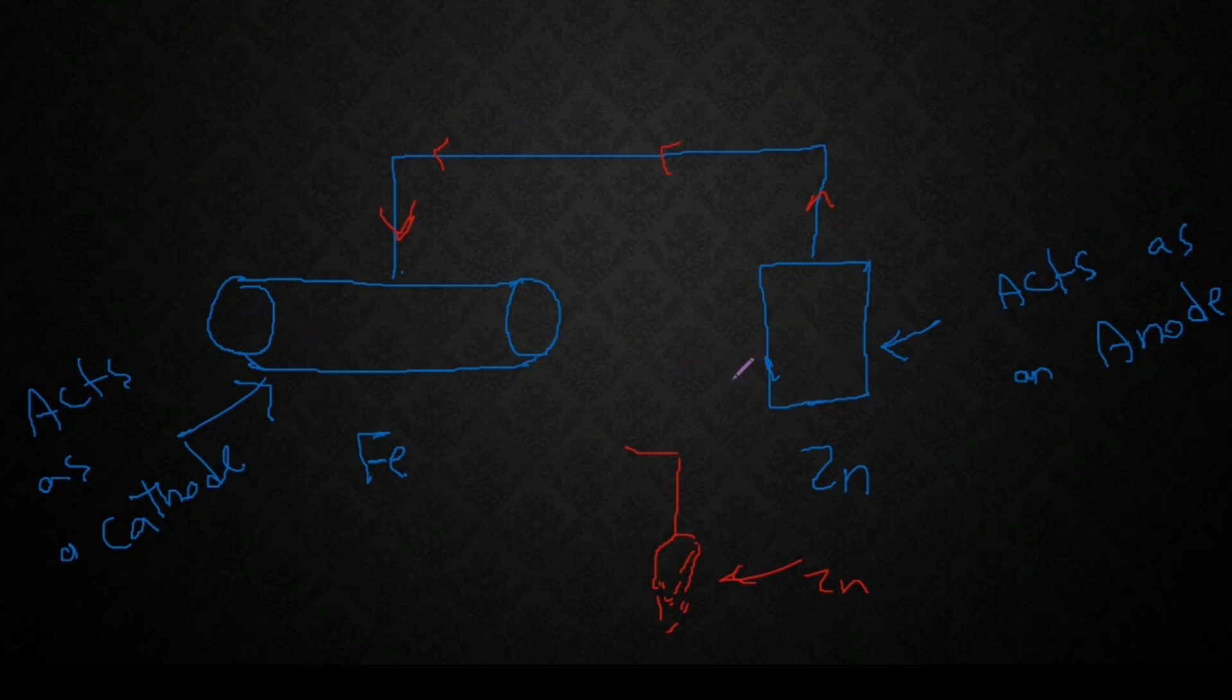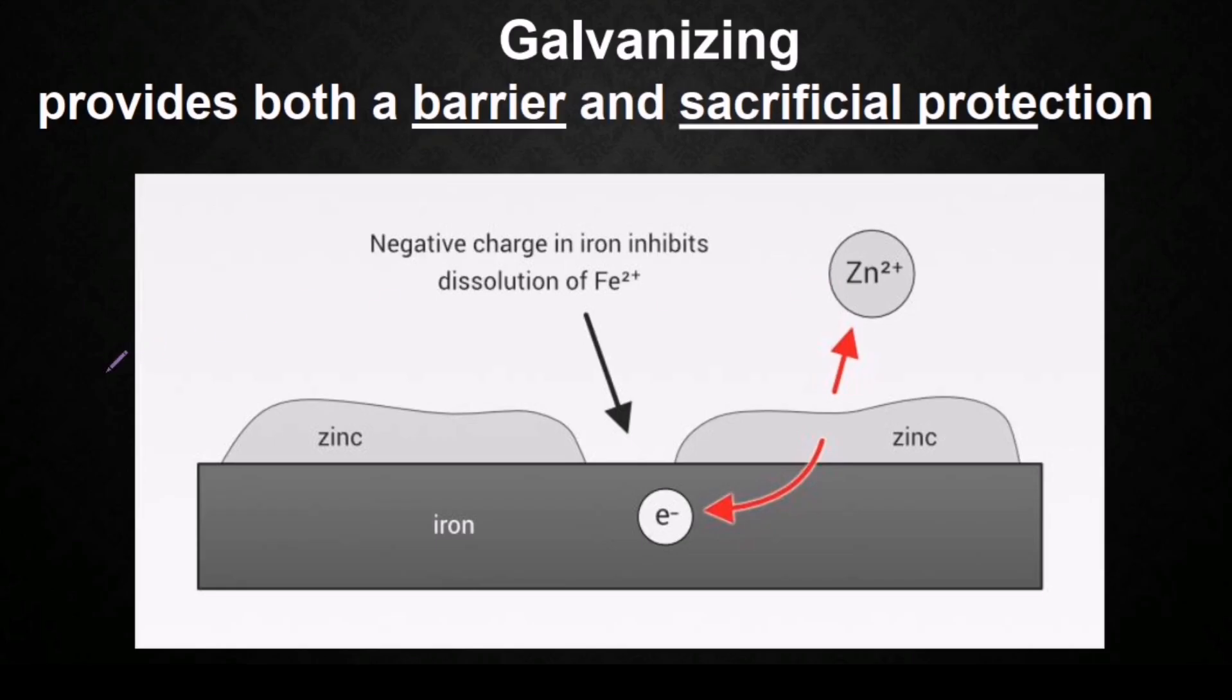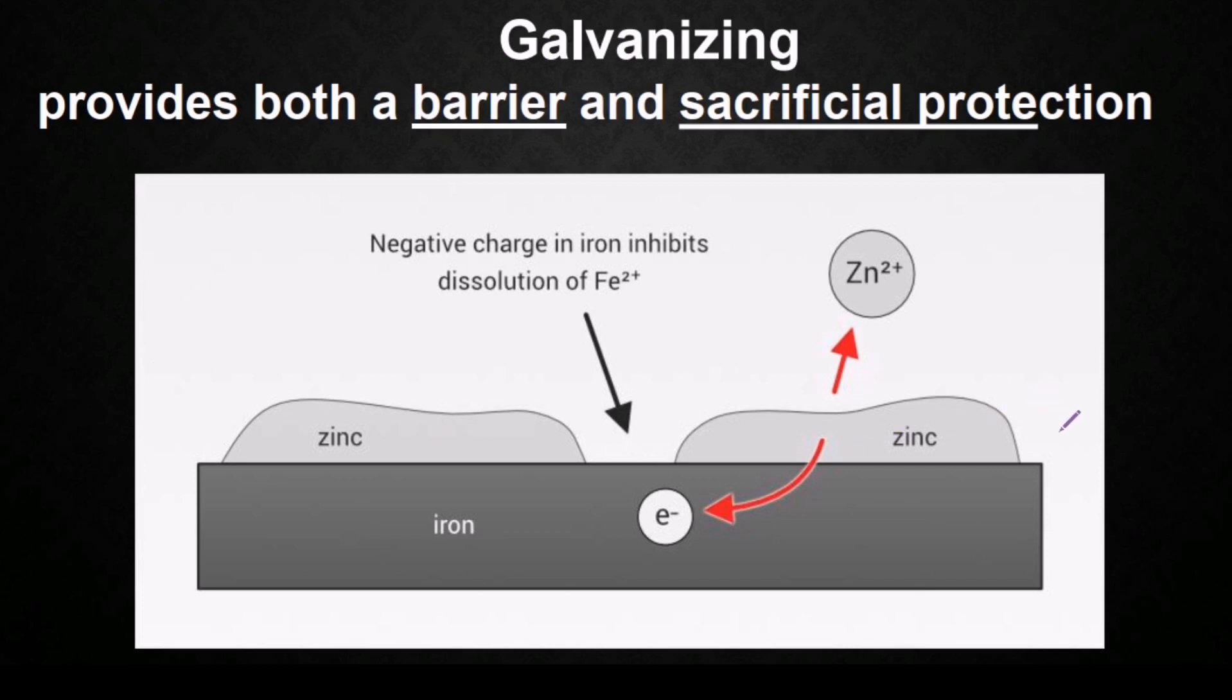So in both methods, the source of electrons is zinc or the sacrificial metal, and instead of using the electrons of iron itself, instead of oxidizing iron itself, so zinc is oxidized. So in conclusion guys, both galvanization and sacrificial protection can be used to protect iron from rusting, but you have to know that galvanization provides both a barrier and sacrificial protection. It means in case zinc gets scratched in galvanization, so it can act as a sacrificial metal and still protects also iron from being rusted.